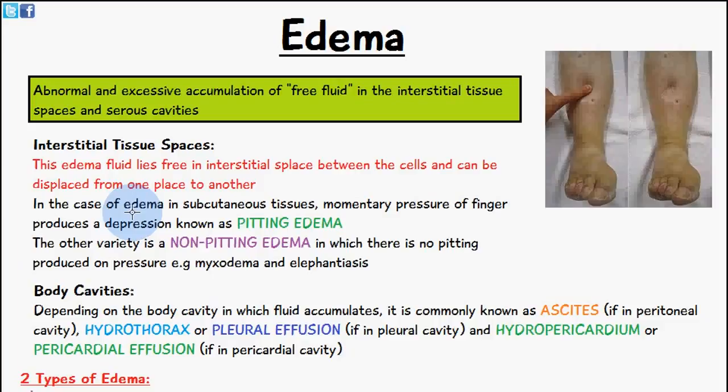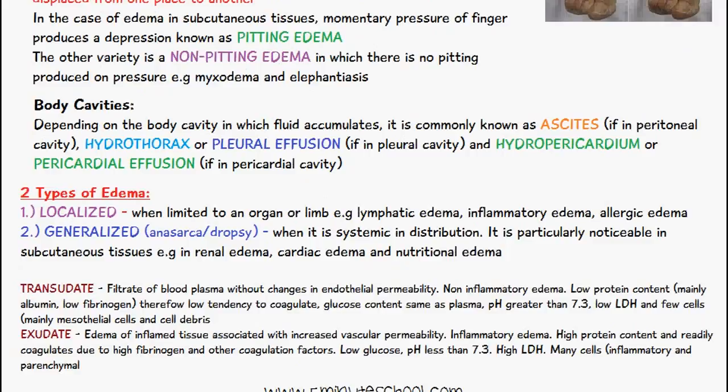Non-pitting edemas include myxedema and elephantiasis. When you have accumulation of free fluid in the body cavities, they are given different names depending on which cavity: it's called ascites if it's in the peritoneal cavity, hydrothorax or pleural effusion if it's in the pleural cavity, and hydropericardium or pericardial effusion if it's in the pericardial cavity.